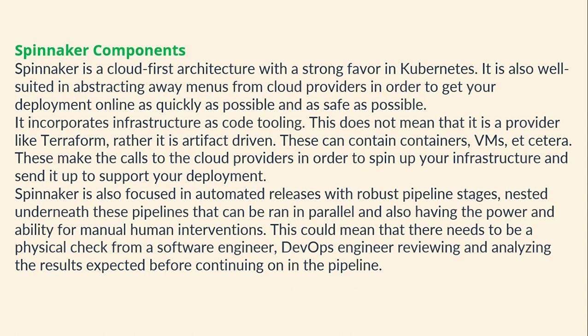Spinnaker is a cloud-first architecture with a strong focus on Kubernetes. It is well suited to abstracting away the complexity of cloud providers in order to get your deployment online as quickly and safely as possible. It incorporates infrastructure-as-code tooling — this does not mean it is a provider like Terraform; rather it is artifact-driven, where artifacts can be containers, VMs, and so on. It makes calls to cloud providers to spin up your infrastructure and support your deployment.